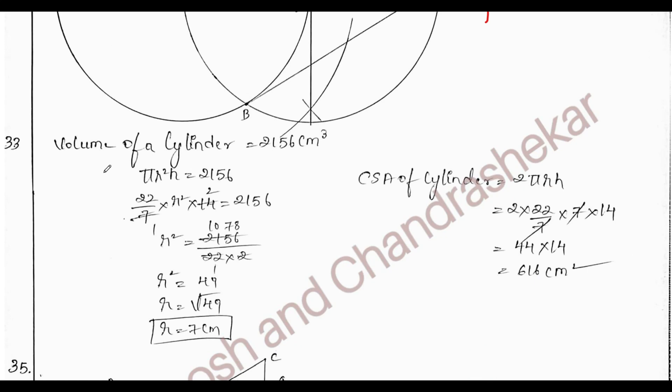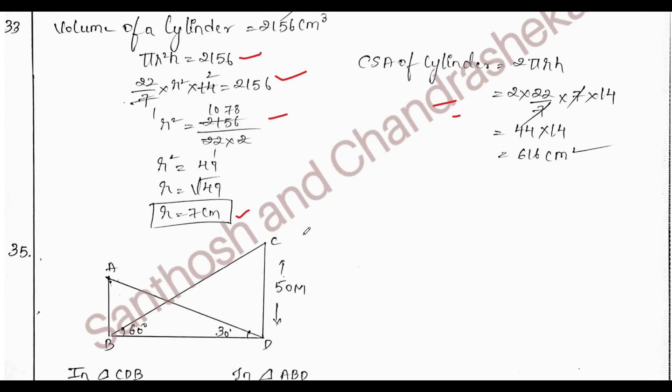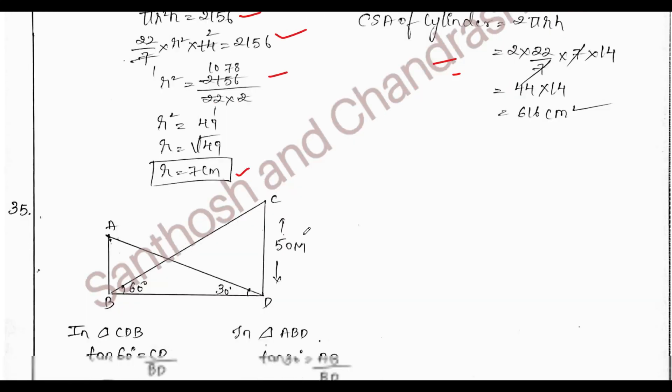This is a little bit application based question. In my online session also, I have told you that volume will be given. You need to find the radius and you need to find the CSA or TSA of the cylinder. Based on that only they have given, based on volume. Volume of a cylinder is 2156 centimeter cube. Finding we get radius as 7. Then CSA of cylinder is 616 centimeter square. This question is asked for 3 marks.